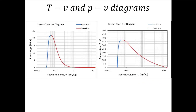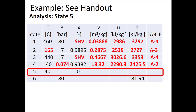Graphing state four looks like state two because we're still under the vapor dome and close to the saturated vapor line. On the PV diagram the pressure is lower than state two, so the point is placed here inside the dome. On the TV diagram the temperature is lower than state two but again we're just inside the vapor dome near the saturated vapor line.